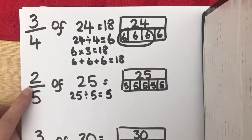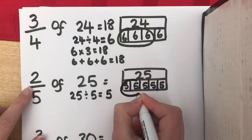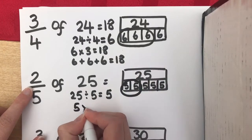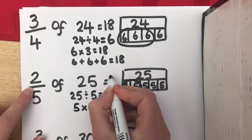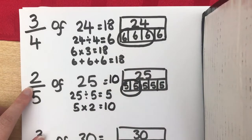But we didn't want 1 fifth, we wanted 2 fifths and 2 fifths gives you 10. And 2 fifths of 25 is 10.